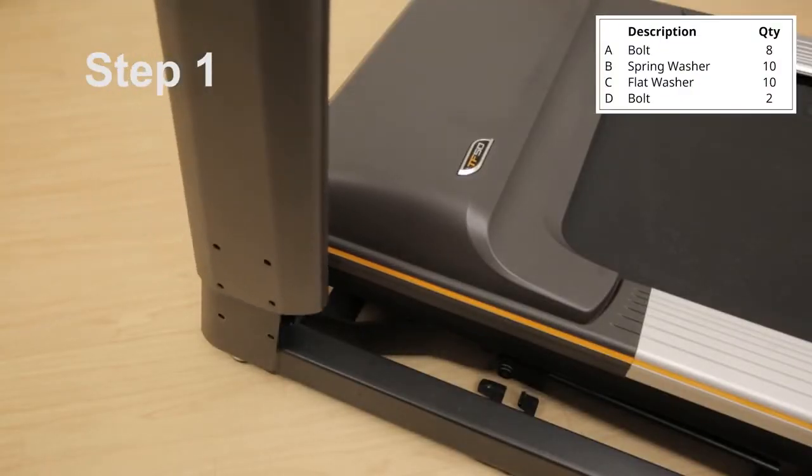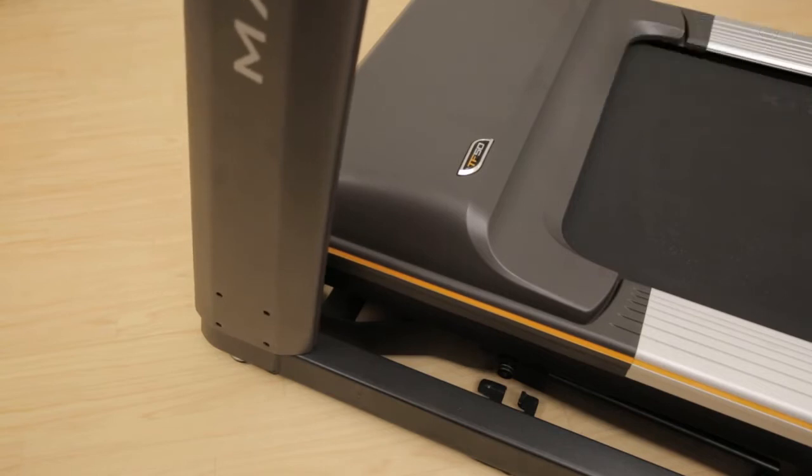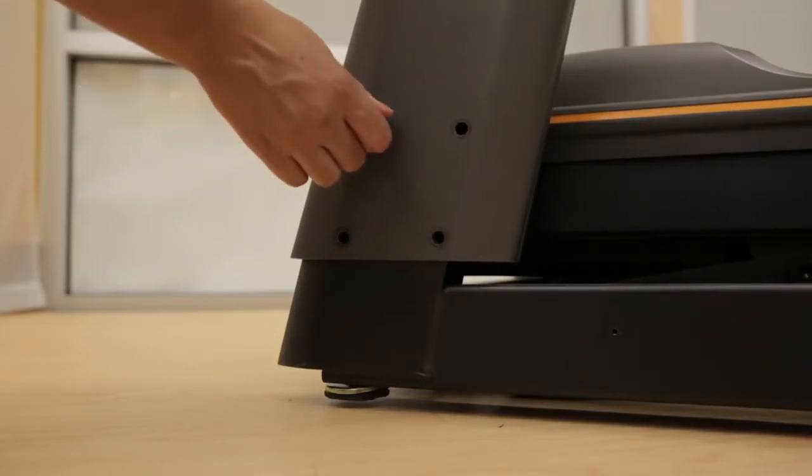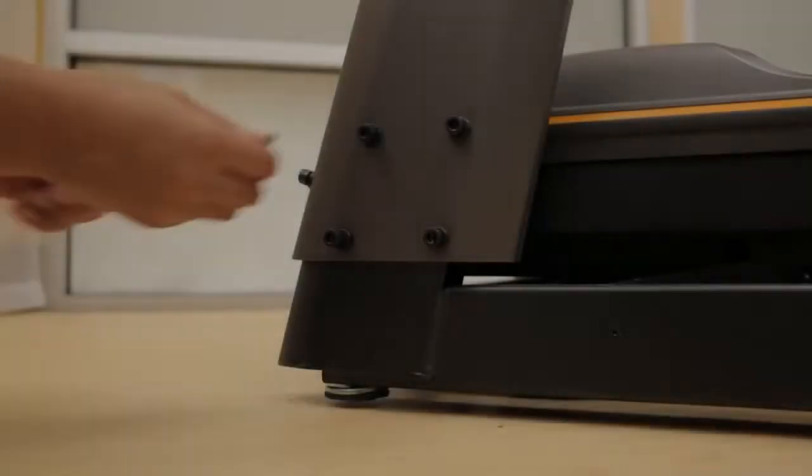Slide the left console mast onto the base frame. Using a 6mm Allen wrench for the side bolts and a 5mm Allen wrench for the front bolt, lightly tighten the bolts.